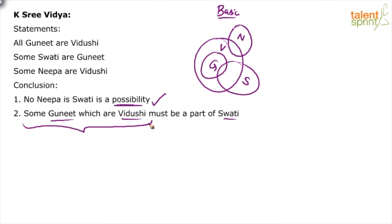Let's first focus on the first part of the conclusion: 'some Gunit which are Vidushi.' Which Gunit are Vidushi? All the Gunit are Vidushi — this entire shaded region. So some Gunit which are Vidushi must be a part of Swati. The basic diagram satisfies this — these Gunit which are Vidushi are a part of Swati. So it satisfies the basic diagram.